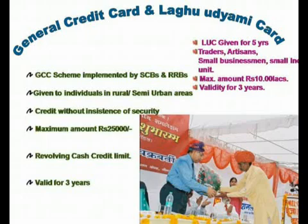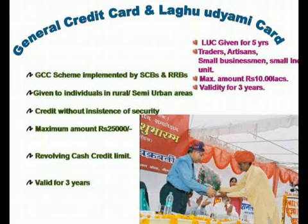Then we have the General Credit Card. This scheme is being implemented by scheduled commercial banks and regional rural banks. It is given to individuals in rural and semi-urban areas — limited to individuals in rural and semi-urban areas. It is credit without insistence of security; banks are not supposed to take any security in lieu of giving this loan. The maximum amount of this loan is Rs. 25,000. Again, it is a revolving cash credit and is valid for 3 years.